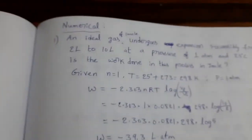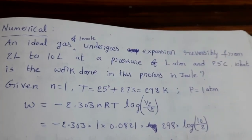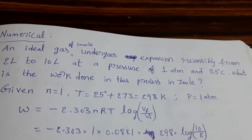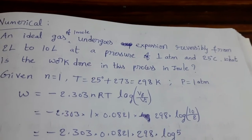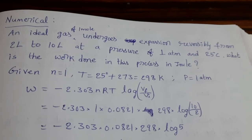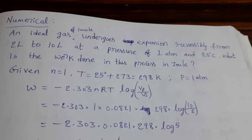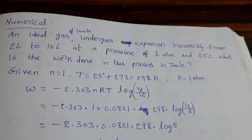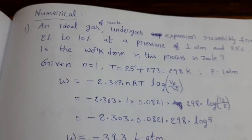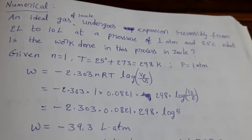Now see the numerical: an ideal gas of one mole undergoes expansion reversibly from 2 liters to 10 liters at a pressure of one atmosphere and 25 degrees Celsius. What is the work done in this process in Joules? Given: n equals 1 mole, temperature is 25°C which is 298 K, initial volume V1 equals 2 L, final volume V2 equals 10 L, pressure equals 1 atmosphere.